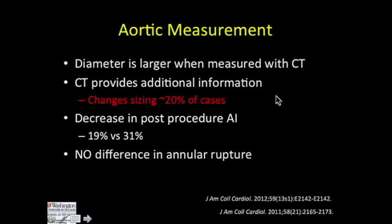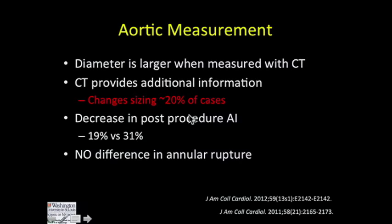Why are these aortic measurements important and what do they add over echocardiography? We've found the diameters measured with CT are larger than those generated with echocardiography, largely due to the ability to image in multiple planes. CT will change the sizing of the device in up to 20% of cases. We have noticed a decrease in post-procedural aortic insufficiency using CT versus echo to size the device — about 19% versus 31%. However, we haven't found any difference in annular rupture using CT, at least to date.